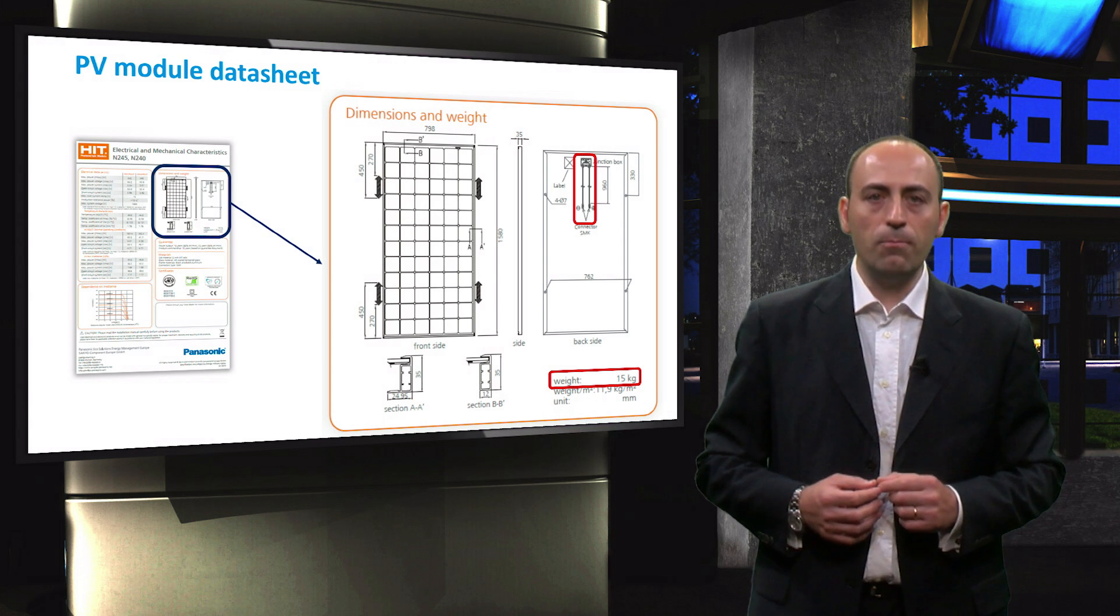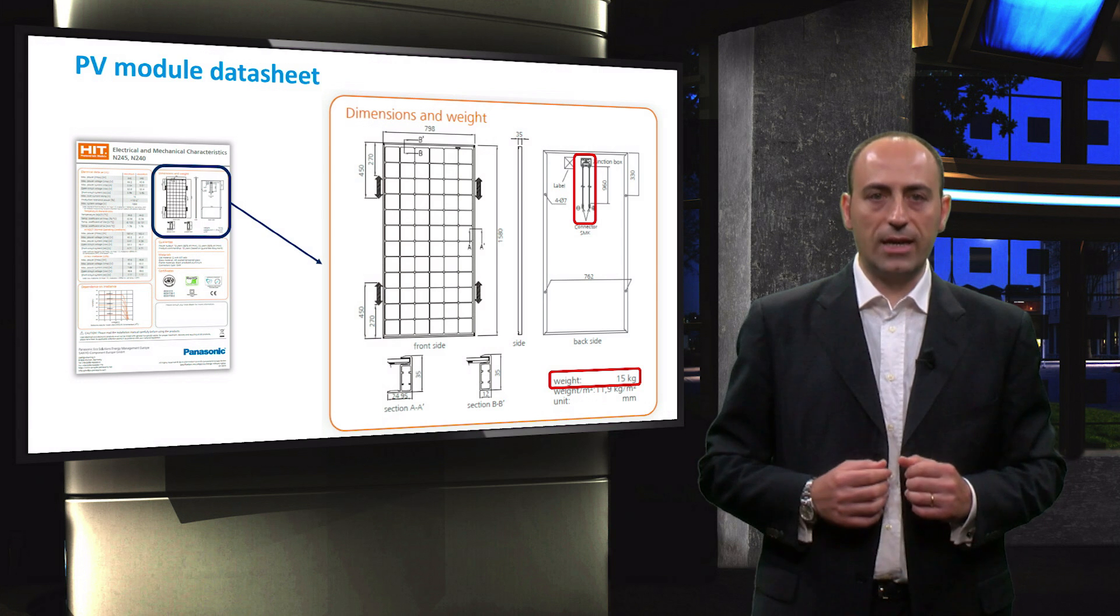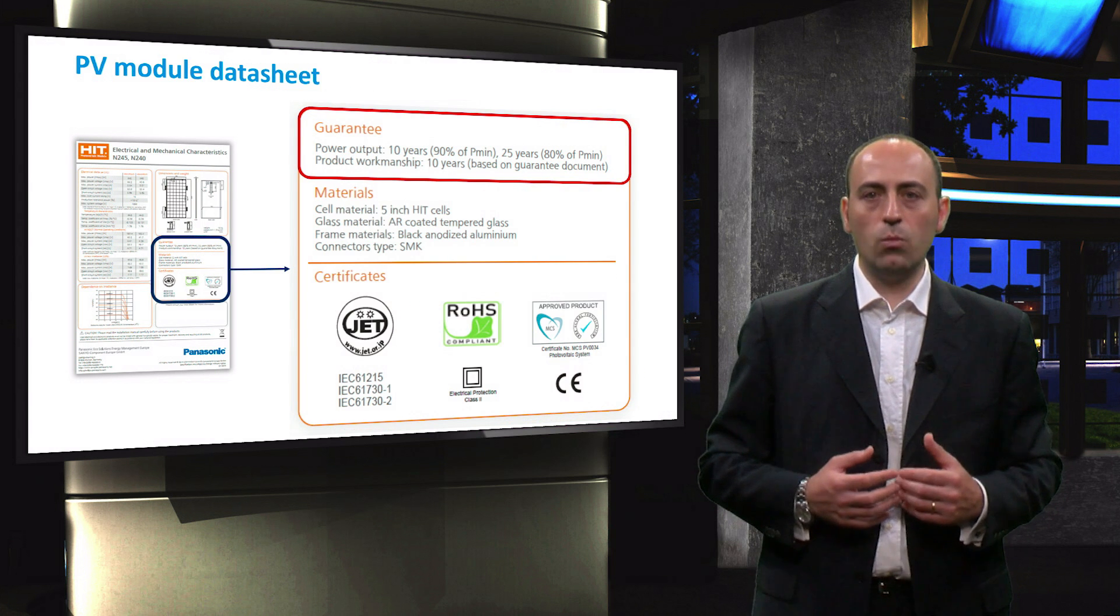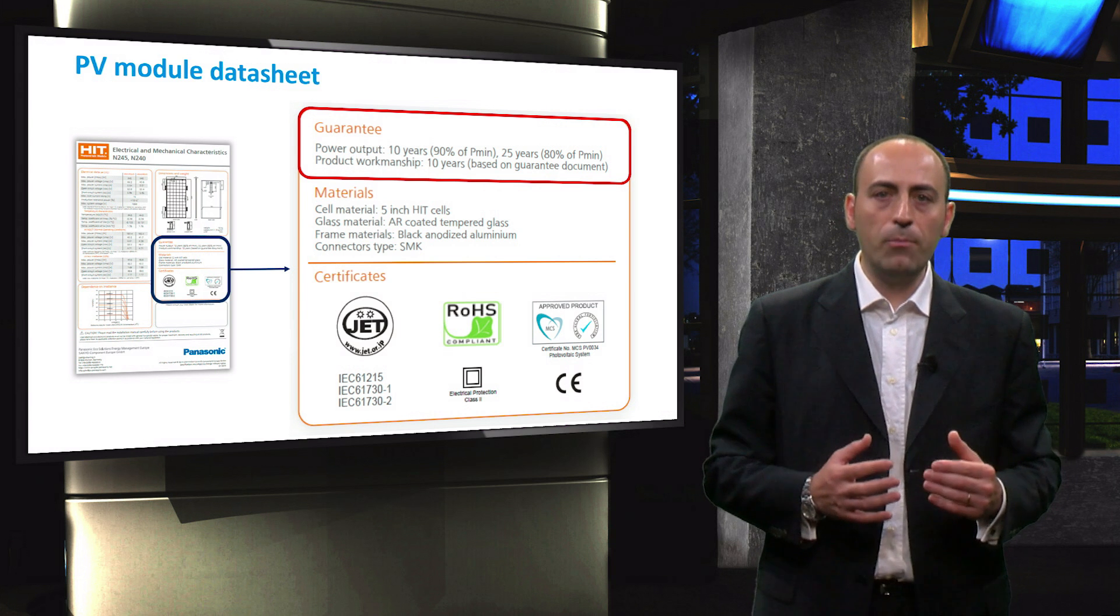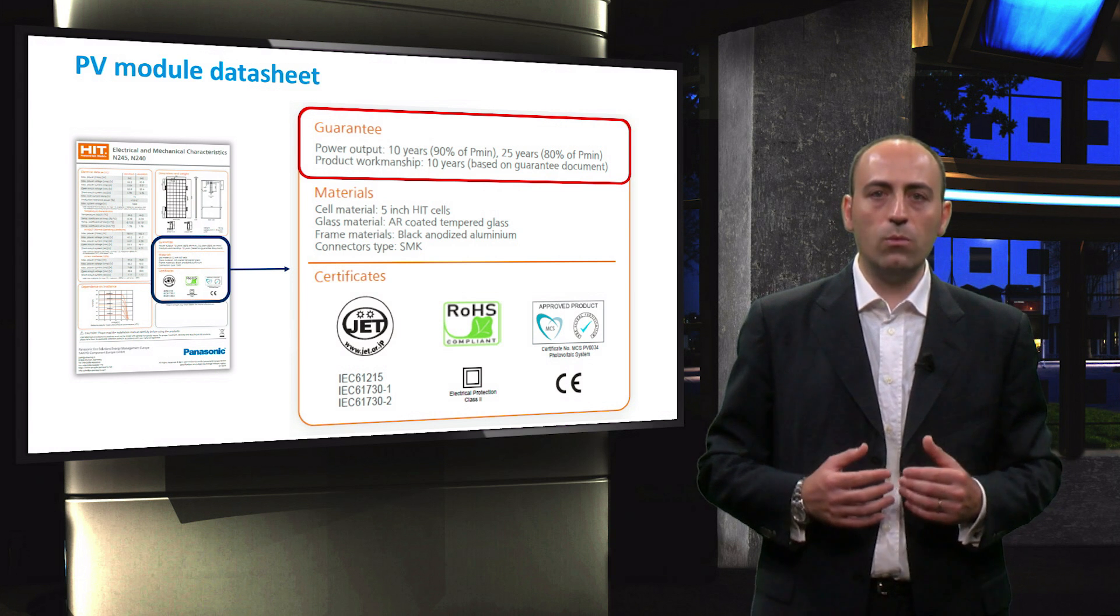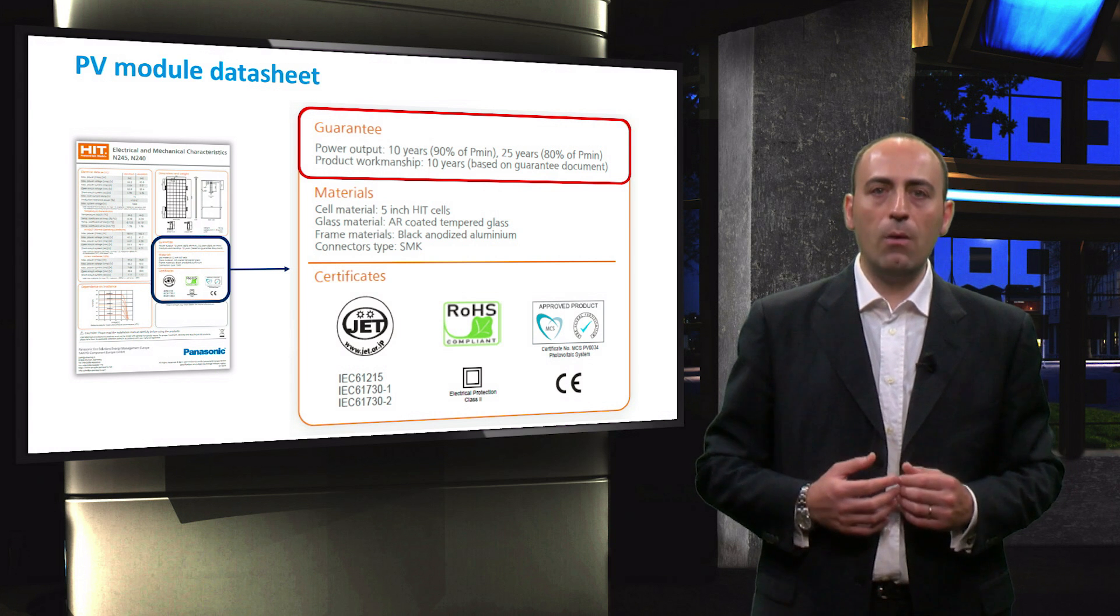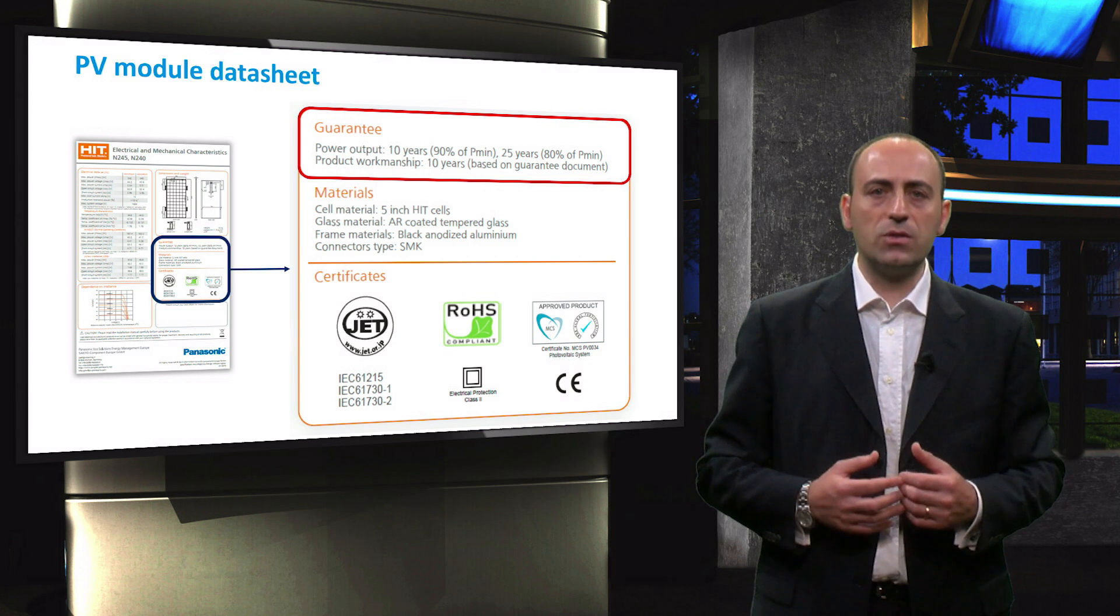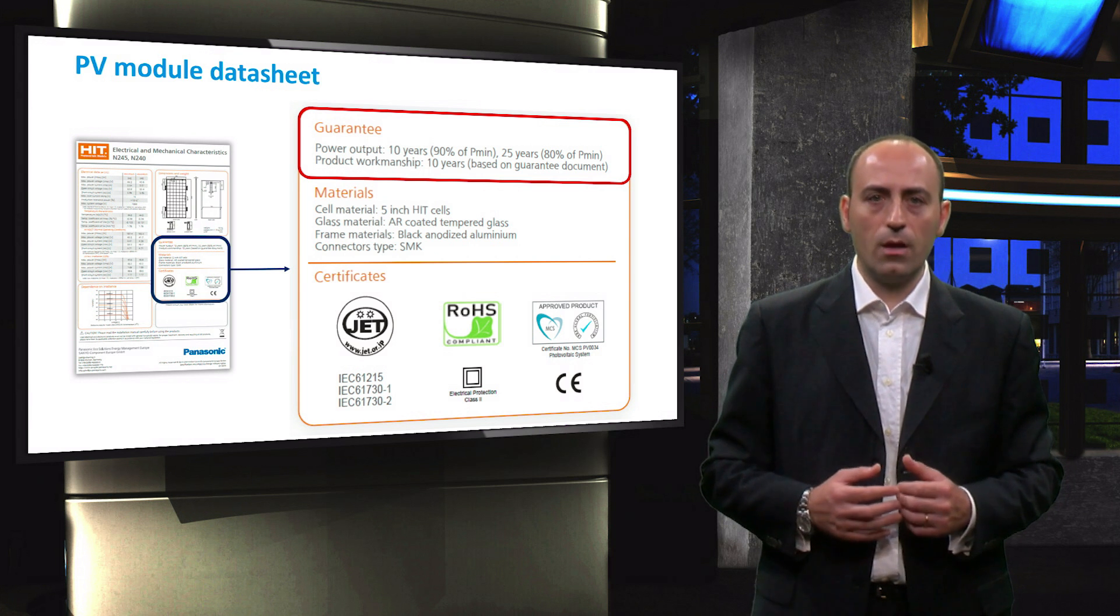Let's move to another box, the one below this section. Here, it is written the warranty strategy, which varies depending on different brands. For example, you can see the standard tiered warranty that ensures a power output of 90% of the minimum power output for the first 10 years and 80% for 25 years.